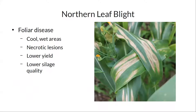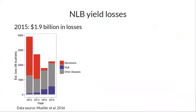Some background: if you've been in a cornfield, you're familiar with northern leaf blight. It's a fungal, foliar disease that occurs in cool, wet areas like central New York State. It causes these nasty necrotic lesions that you can see here, and as you might imagine, that leads to lower yield and also lower silage quality — so fewer available nutrients.